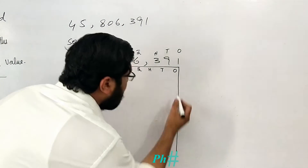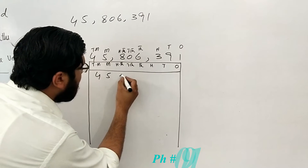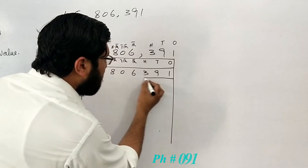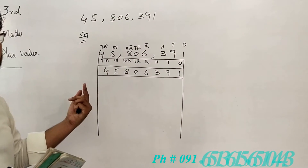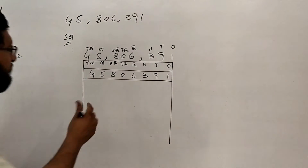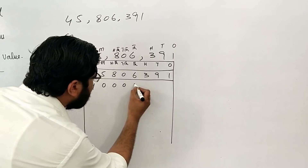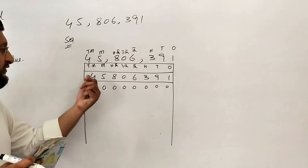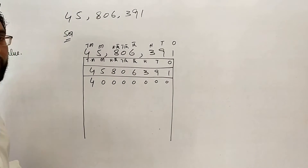The number is 45,806,391. The digit 4 is in the ten millions place. The next digit, 5, is in the millions place. The next digit, 8, is in the hundred thousands place.